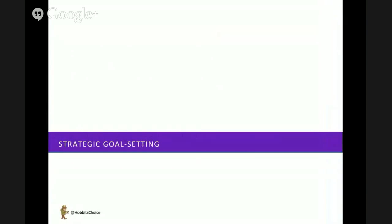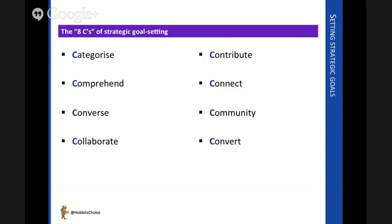From that point onwards, those objectives need to be turned into specific strategic goals — what do we want the outcome to be? The eight C's is one commonly used framework. It's about categorising, comprehending, conversing, collaborating, contributing, connecting, community building, and converting.